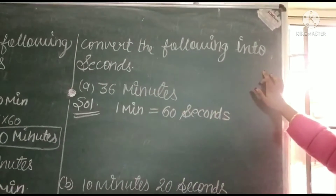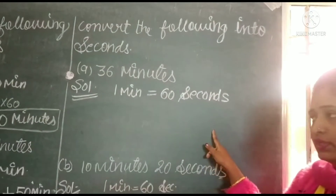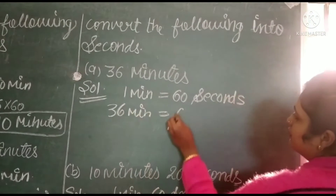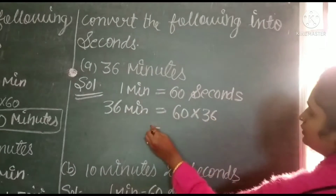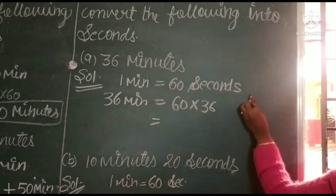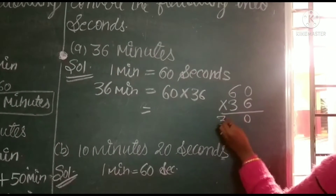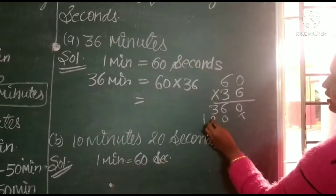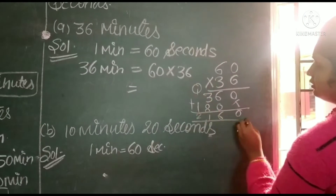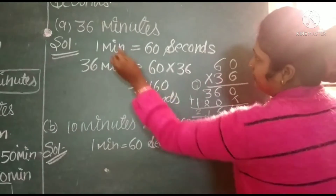Next question: convert the following into seconds. We have 36 minutes. We know that 1 minute equals to 60 seconds. So, 36 minutes equals to 60 multiplied by 36. We do the multiplication and get 2160 seconds. So in 36 minutes, there are 2160 seconds.